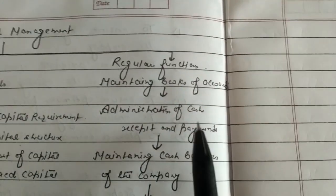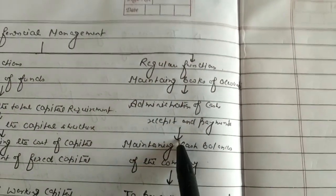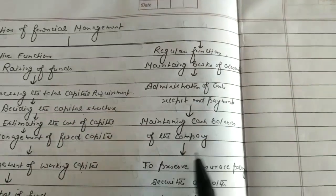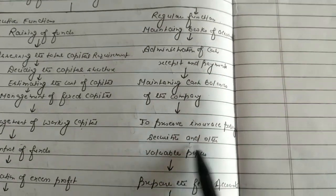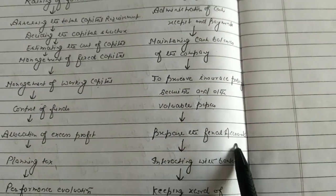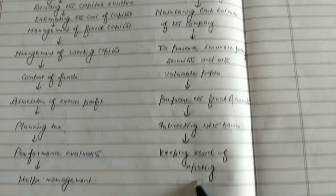Regular functions include maintaining books of accounts, administration of cash and payments, maintaining cash balances of the company, preserving insurance policies, securities and other valuable papers, preparing final accounts, interacting with banks, and keeping records and reporting.